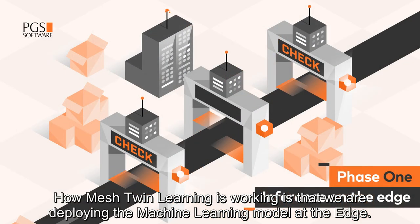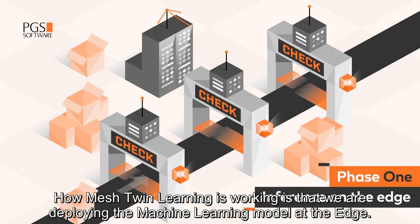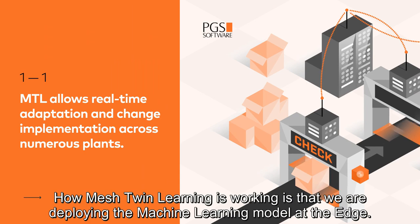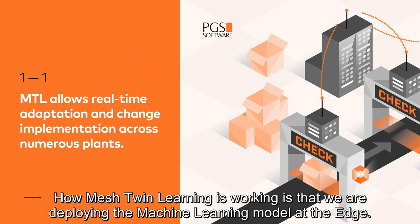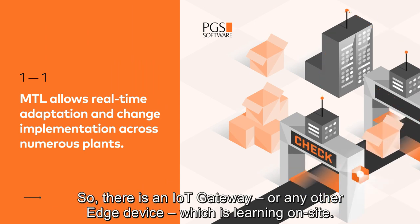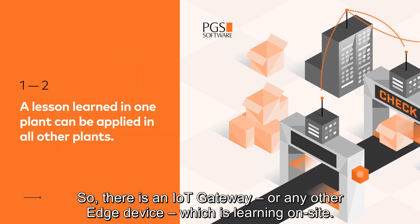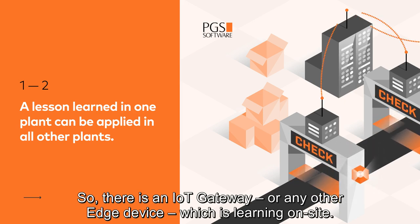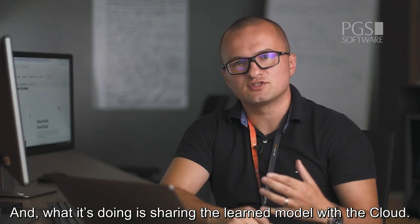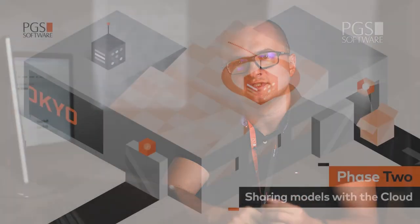How Mesh Twin Learning works is that we are deploying the machine learning model at the edge. There is an IoT gateway or any other edge device which is learning on site. And what it's doing is sharing the learned model with the cloud.